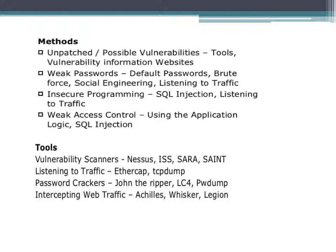Tools used to identify vulnerabilities include vulnerability scanners such as Nessus, ISS, SARA, and SAINT; traffic listening tools such as EtherCAP and TCP DUMB; password crackers such as John the Ripper, LC4, and PWDUMP; and web traffic interception tools such as Achilles, Whisker, and Legion.